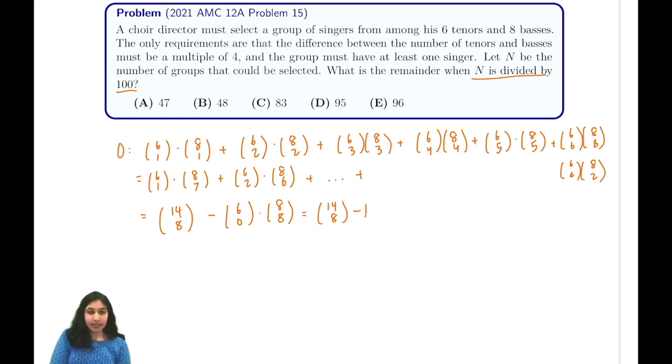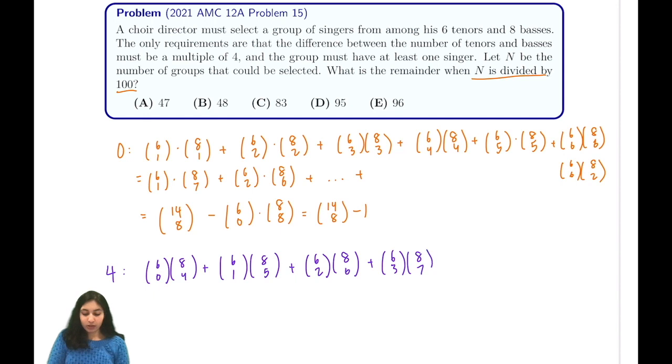Now let's move on to our next case, where we have a difference of 4 between the numbers of tenors and bases. So we can have 0 tenors and 4 bases, or we could have 1 tenor, which is 6 choose 1, and 5 bases. We have 6 choose 2 times 8 choose 6, 6 choose 3 times 8 choose 7, plus 6 choose 4 times 8 choose 8.